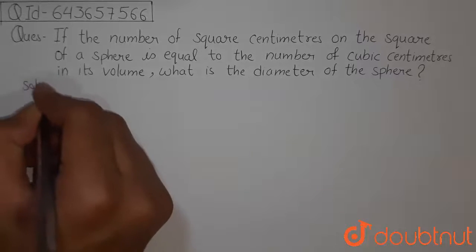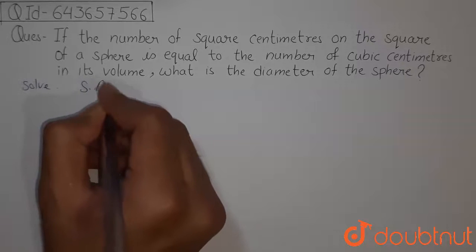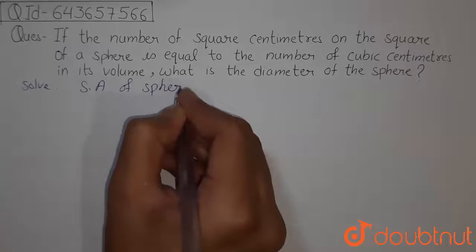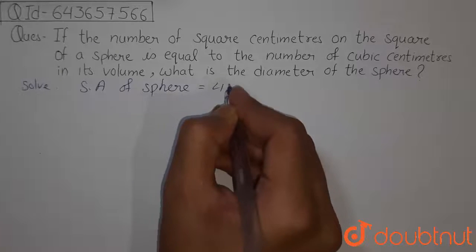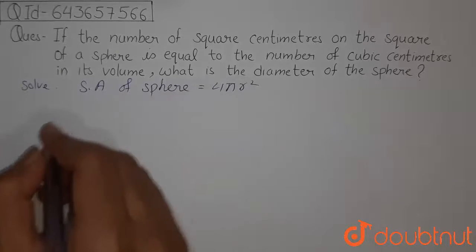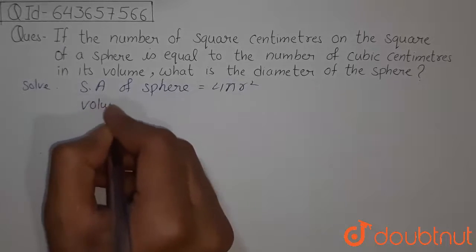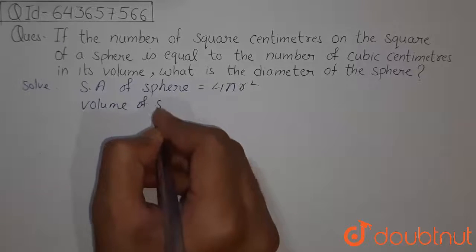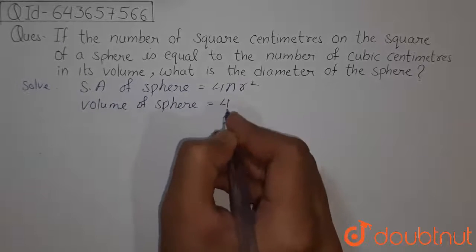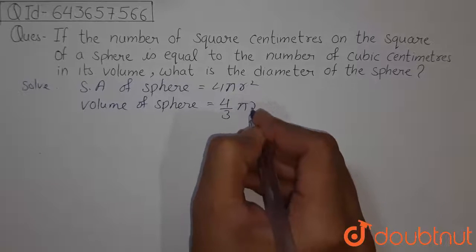So first, we will write the surface area of sphere is given by 4πr² and volume of sphere is given by 4/3 πr³.